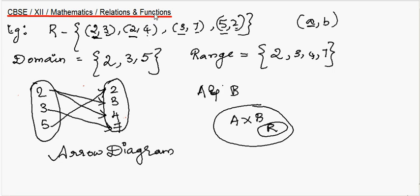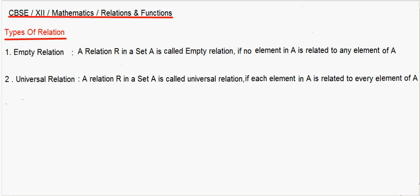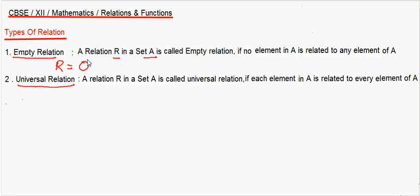So I hope you are clear with what is domain and range. Now let's move on to the next part — that is types of relation. You need to understand all these types of relations so that it will be helpful for you to solve problems easily. There are basically two types of relations: the first one is empty relation and the second is universal relation. A relation R in set A is called an empty relation if no element in A is related to any element of A. That means R is equal to a void set — you cannot find any relation in the given set A.